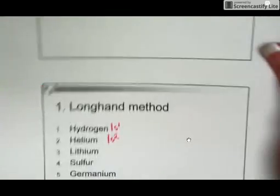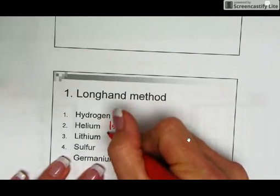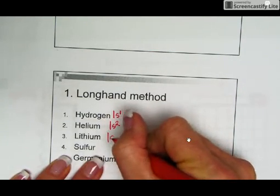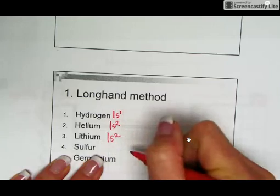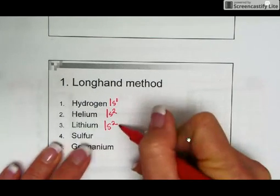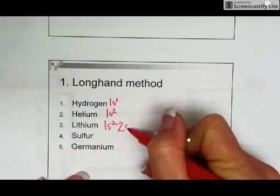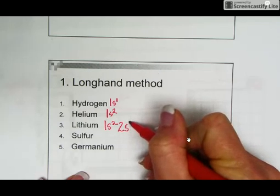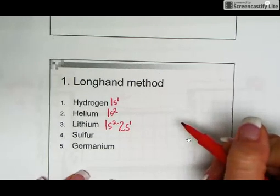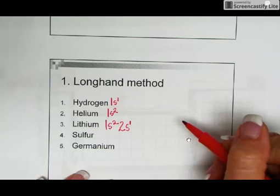Now these we did in the notes today already, but I'm just reviewing back over for those that were not here. So we said 1s2 because we had to pass by hydrogen and helium first, and then we came to the second energy level. We saw the s-shaped orbital, and lithium was the very first element.